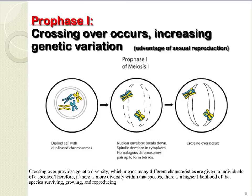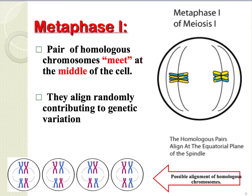Prophase I is where crossing over occurs. This increases genetic variation, which is very important for species, giving them a higher likelihood of surviving, growing, and reproducing. Metaphase I is where homologous chromosomes pair up and meet at the middle of the cell. They align randomly, contributing once again to genetic variation.